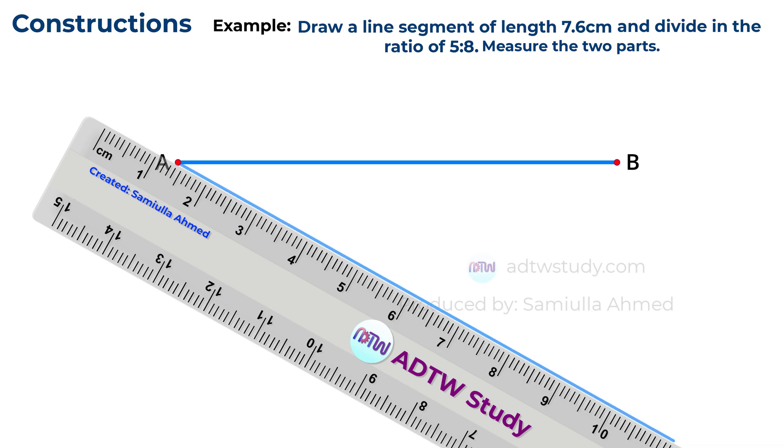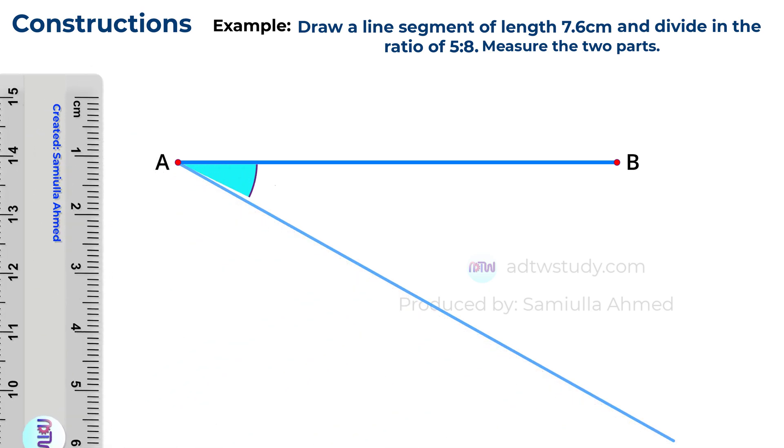Remember, this angle should always be less than 90 degrees. Now we need to divide this line into 13 equal parts. Why 13 equal parts? Since the ratio is 5 to 8, the total number of parts is 5 plus 8 equals 13.